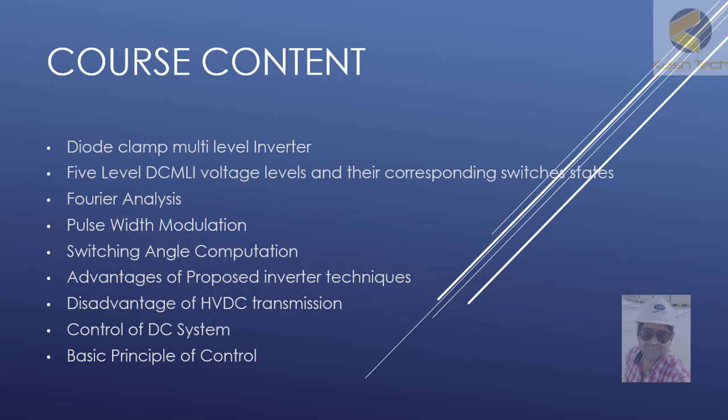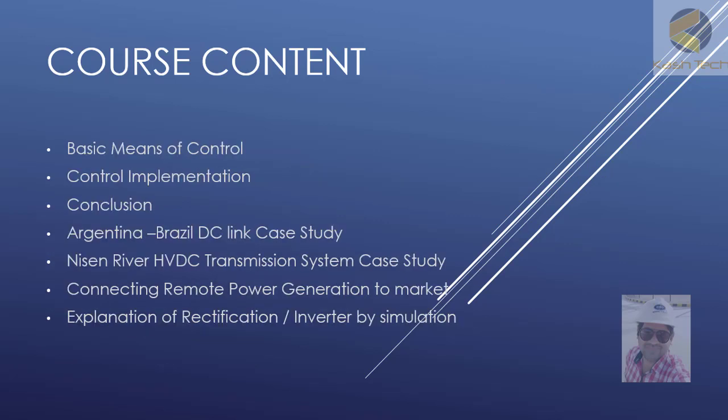We will discuss the advantages and disadvantages of HVDC, as well as control of DC systems — basic principles of control, basic means of control, and control implementation. At the end, we will give a conclusion of everything discussed about HVAC and DC systems. I have also added a case study of the Argentina–Brazil DC link, which is very interesting because one side is designed at 50 Hz and the other at 60 Hz, connected through DC. Another case study included is the Itaipu HVDC transmission system.